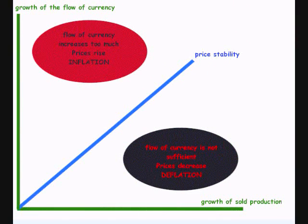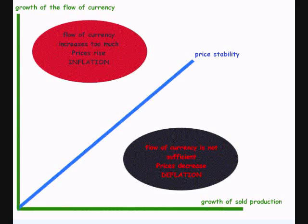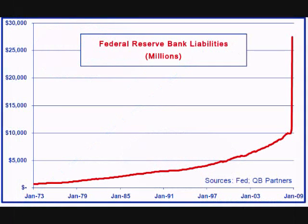In the last video, I showed how changing the reserve requirements raises or lowers the money supply. If the Fed raises reserve levels, it leaves less money for the banks to loan out, which reduces the amount of currency in circulation. If the Fed lowers reserve rates, it leaves more money for banks to loan out, which increases the amount of currency in circulation.